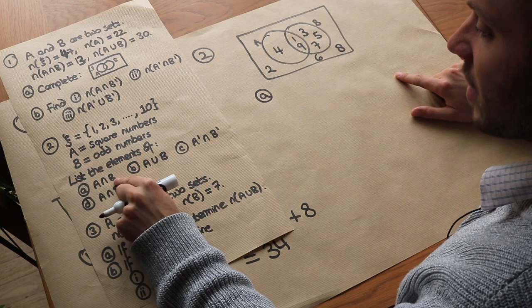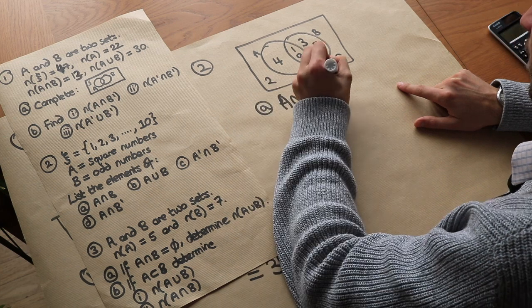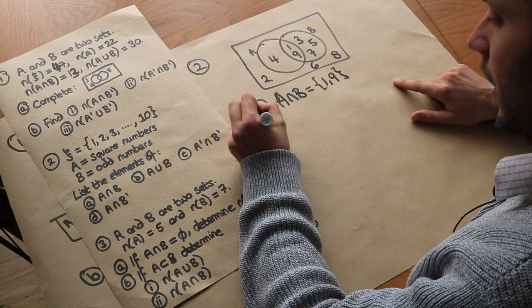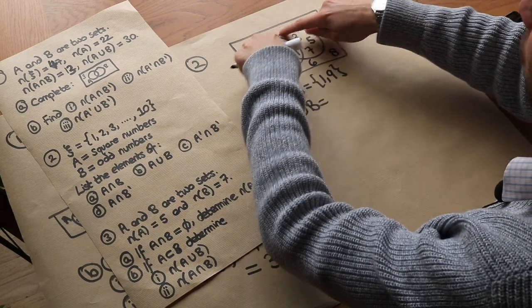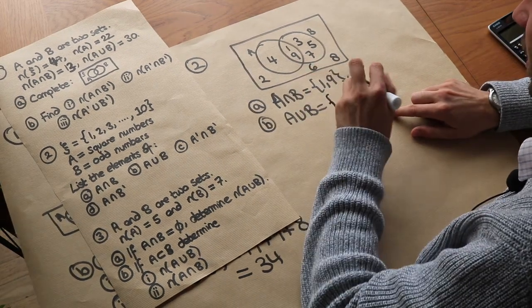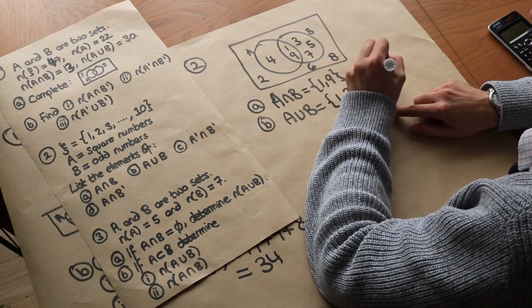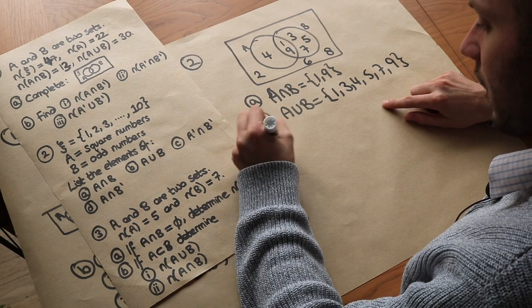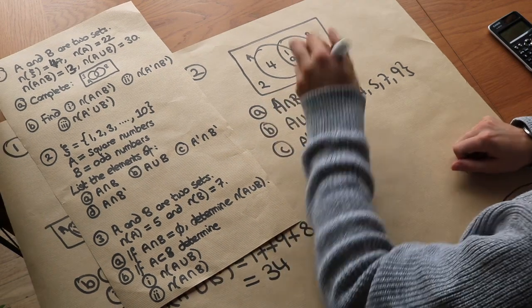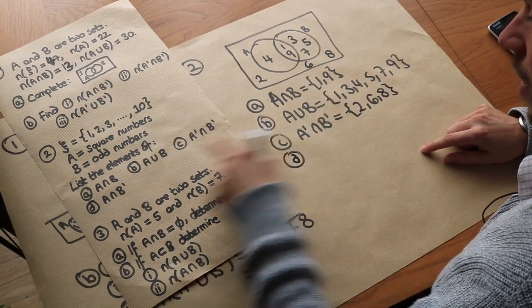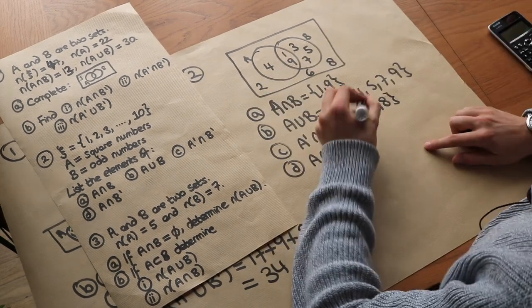From the Venn diagram we can now answer each part. A ∩ B — things in both A and B — is {1, 9}. A ∪ B — things in A or B — listed in ascending order is {1, 3, 4, 5, 7, 9}. A' ∩ B' — not in A and not in B — is {2, 6, 8}. And A ∩ B' — in A but not in B — is just {4}.